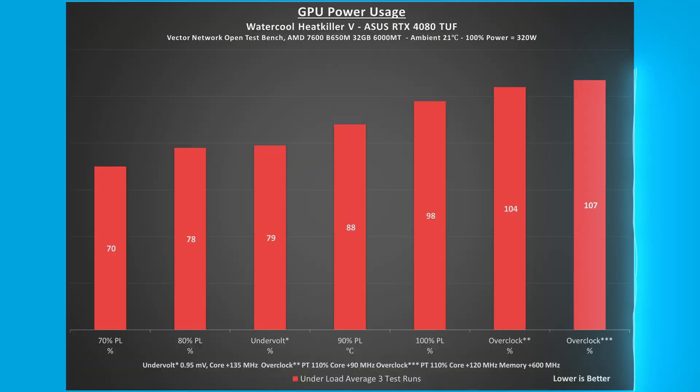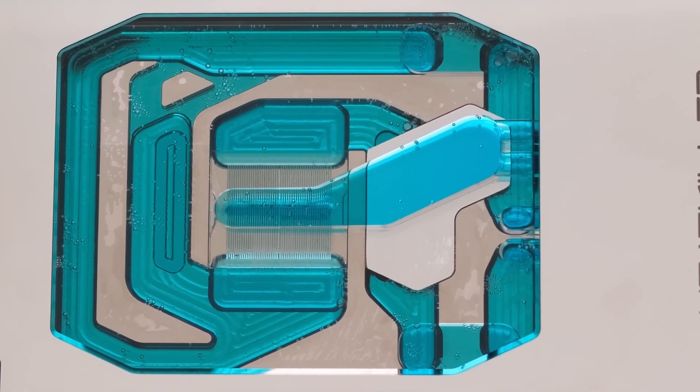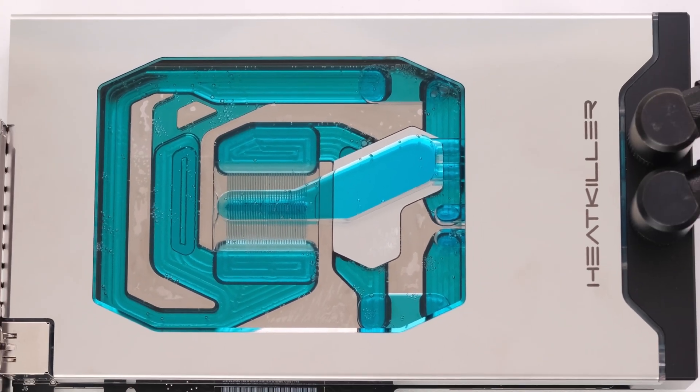The 100% power limit is at 320 watts. Undervolting the card reduces the wattage from approximately 315 at 98% to 255 at 79%, a 60 watt or 19% reduction.